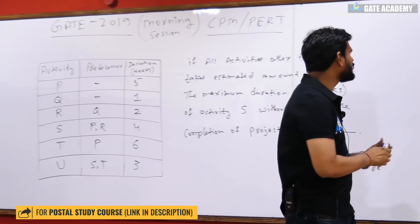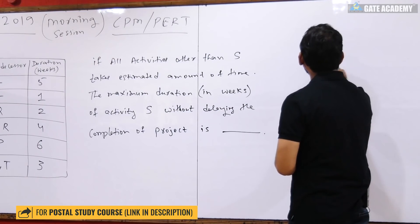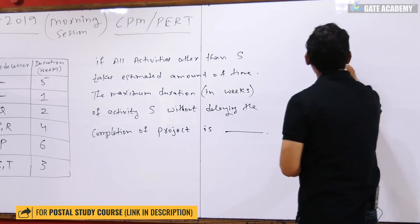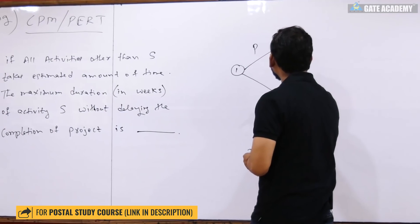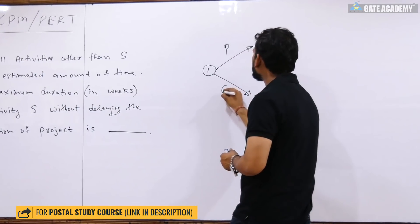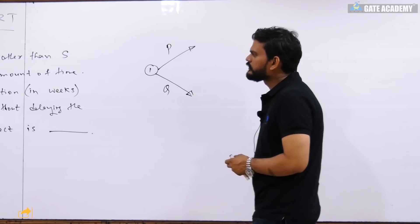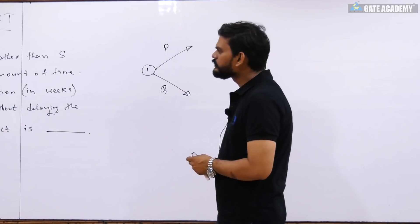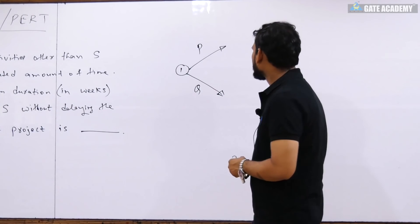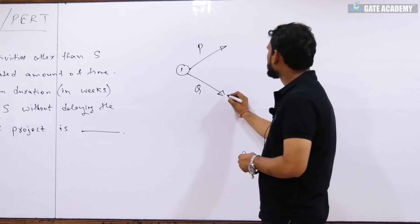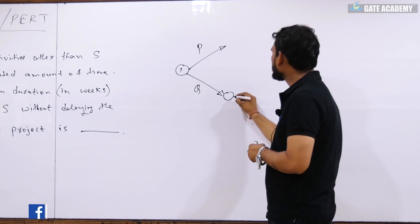So first one node can start. I will make it like this — first one node. P and Q start from here. You can see P and Q start. R follows the same structure.